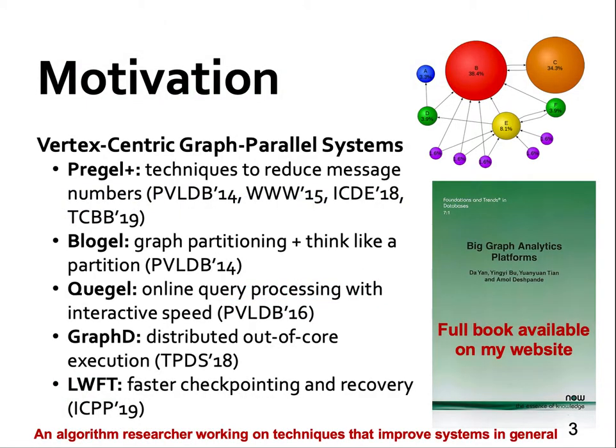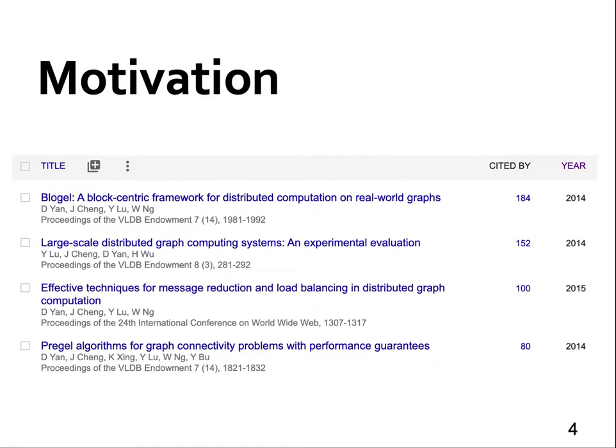I have been working on a category of distributed graph processing systems that adopt a so-called think like a vertex programming paradigm, as pioneered by Google's Pregel system published in Sigmod 2010. An example of a vertex-centric program is PageRank, where each vertex distributes its PageRank value along outgoing edges in each iteration, and so the bottleneck is communication for message shuffling. I have been focusing on proposing general techniques for reducing the IO bottleneck, such as graph partitioning and message reduction. We have been quite successful in this area with a number of works published. Our works have gained a lot of attention with systems being used by other researchers, and the papers well cited.